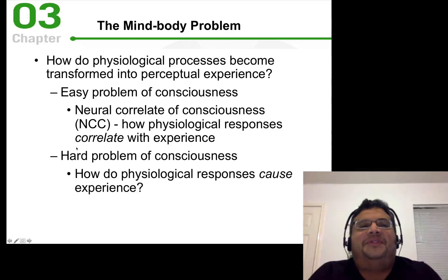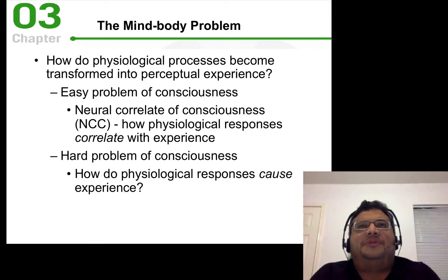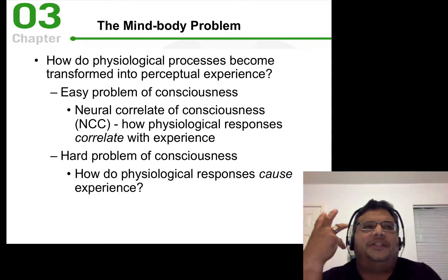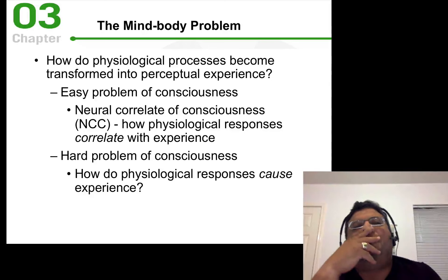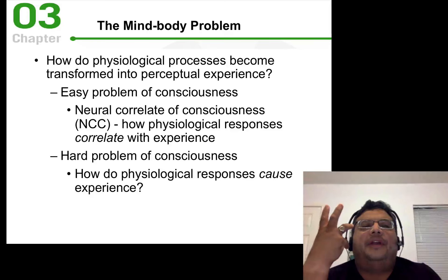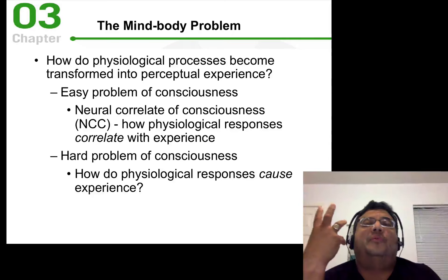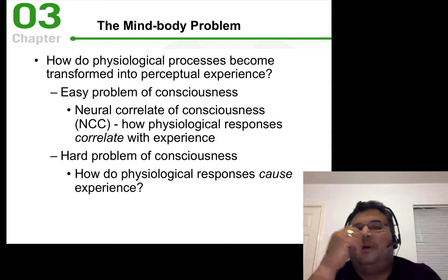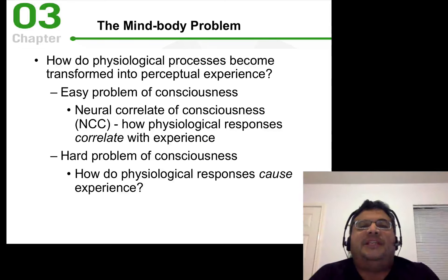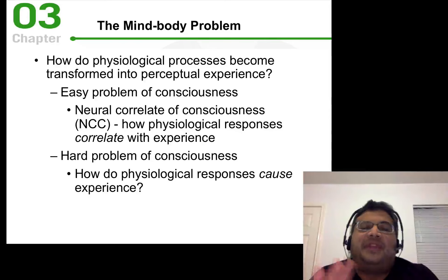This is the most challenging and difficult problem in psychology: how does the physiology — all this neural firing in our heads — get turned into perception? More specifically, how does all this firing get turned into consciousness, this awareness of what we're doing and what we are? The problem of consciousness has been broken into two categories: the easy problem and the hard problem.